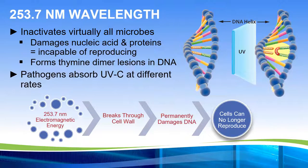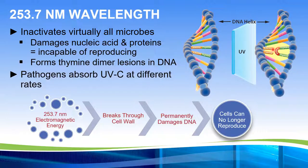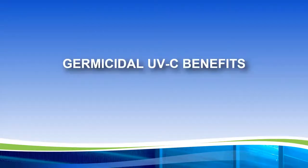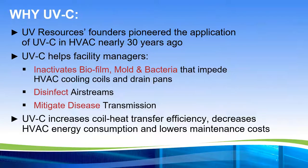UVC is the natural germicidal portion of the electromagnetic spectrum. At 253.7 nanometers, that waveform gets into a cell and starts to damage the nucleic acid and proteins within that cell. It actually causes a thymine dimer lesion — breaking the DNA apart and causing a lesion called a dimer. That cell can no longer reproduce, it can no longer feed, it becomes inactive. So the cell is no longer active.